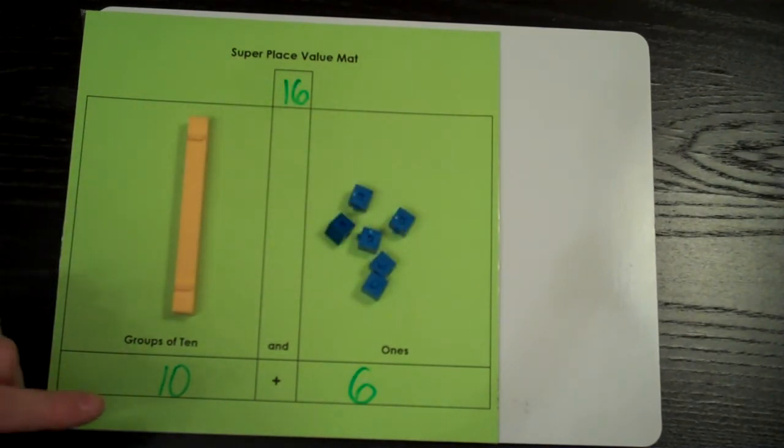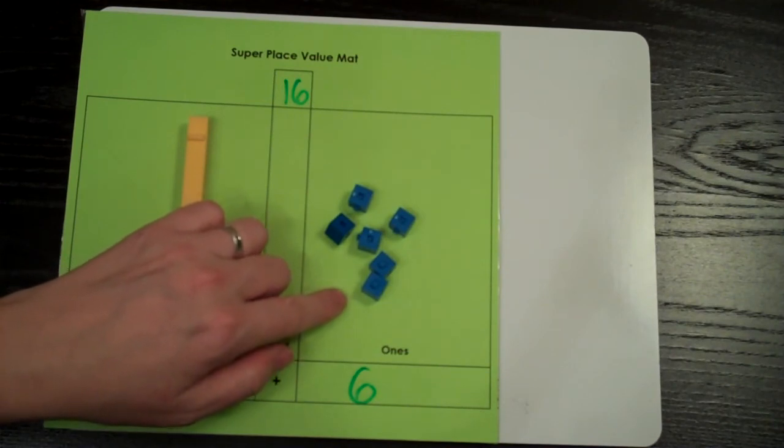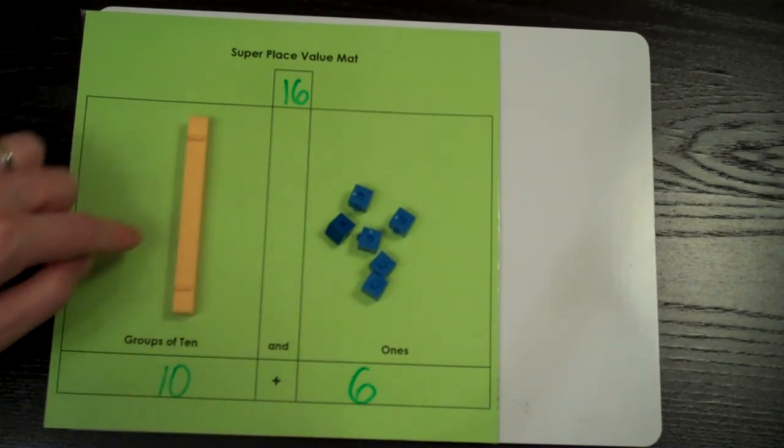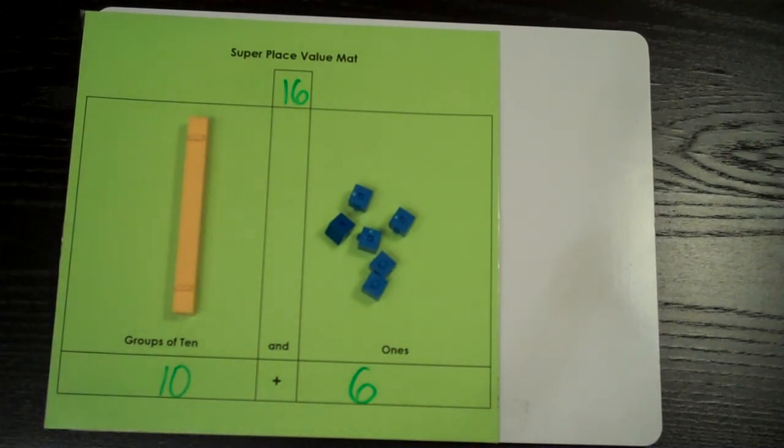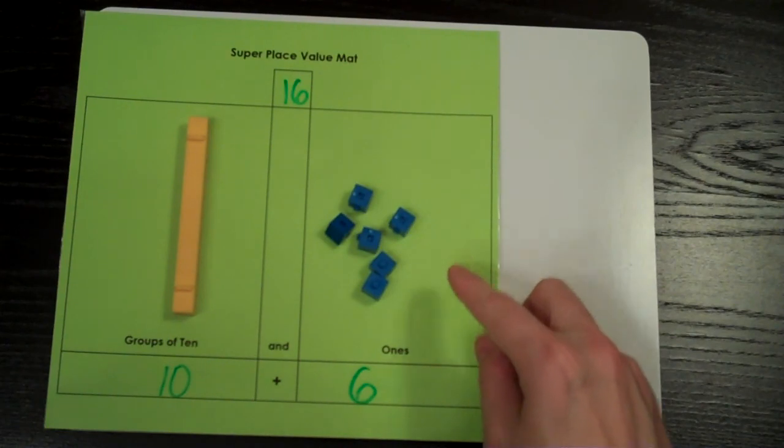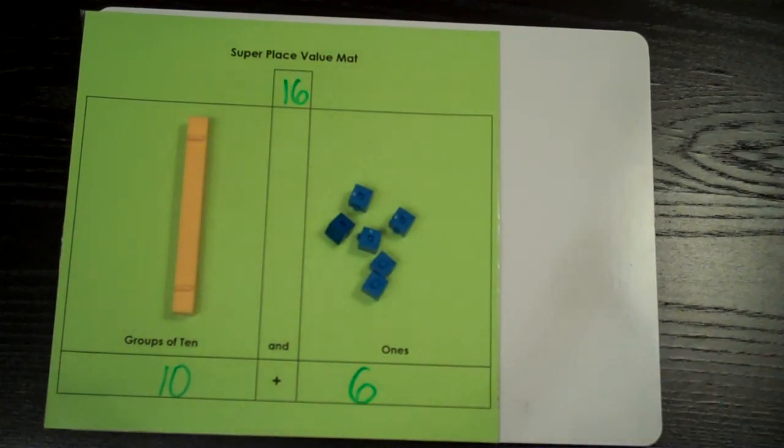Remember, it's important to have 9 or less manipulatives in each place value spot. You try this if you have some base 10 blocks near you. Grab a handful of units and try trading 10 ones for one 10 if you have more than 9 units in your ones place. Good luck!